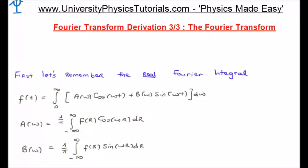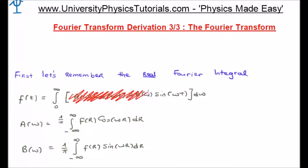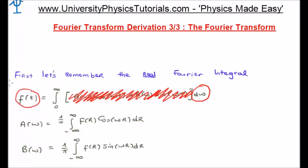In video two of three I also began motivating the concept of a transform. Looking at this expression, if we integrate something with respect to omega, the result has integrated out the omega dependence and thus cannot have any functional dependence on omega. So it should seem logical that if we integrate with respect to omega we should get something in return which does not depend on omega.